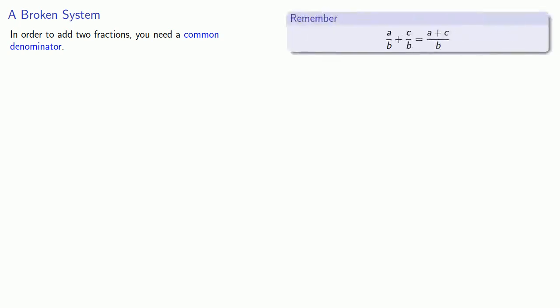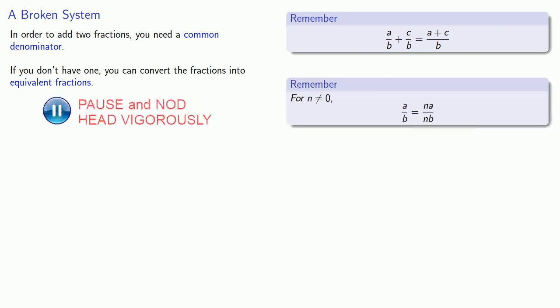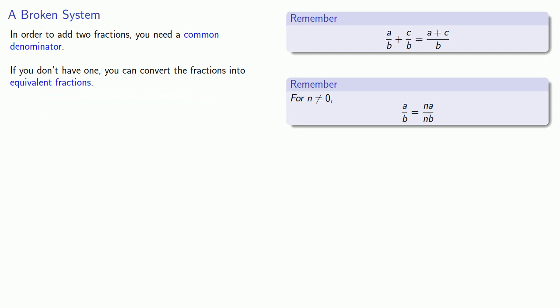But if you don't have one, you can convert the fractions into equivalent fractions by multiplying numerator and denominator by the same thing. That's arithmetic. Algebra is generalized arithmetic, and so we can generalize this for rational expressions.